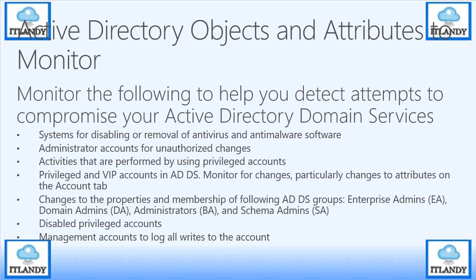The last part for part 3b is monitoring to help detect attempts to compromise your AD Domain Services (ADDS). Monitor systems for disabling or removal of antivirus and anti-malware software. Monitor admin accounts for unauthorized changes and activity performed using privileged accounts. For privileged and VIP accounts in ADDS, monitor changes — specifically changes to attributes and properties, membership in enterprise admin, domain admin, schema admin, and administrator groups — as well as disabled privileged accounts. Use PIM management accounts to log all rights to the account. These are the high-level best practices around monitoring.